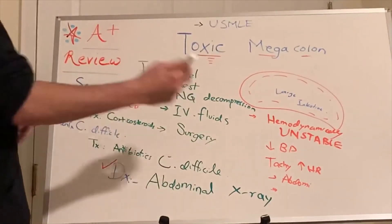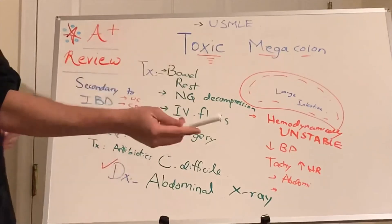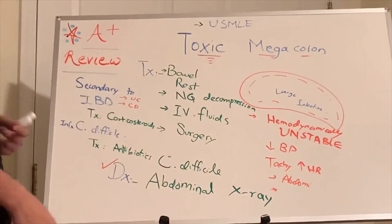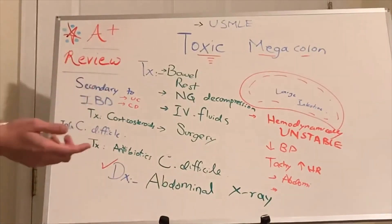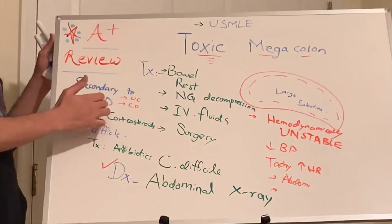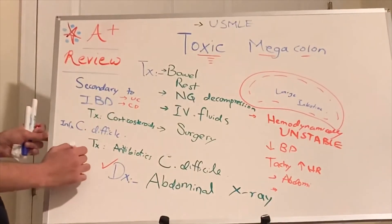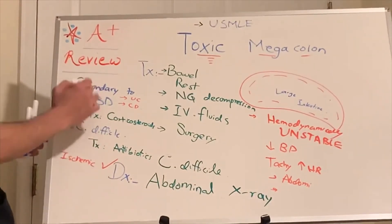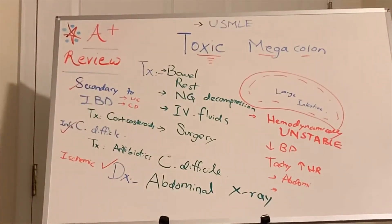The patient presents hemodynamically unstable because it is a toxic picture. We can also have acute abdomen. Ischemia can also cause toxic megacolon — but the most common causes are inflammatory bowel disease and infection (C. diff). Ischemia is a third, less likely cause, but questions most commonly focus on IBD and infection.